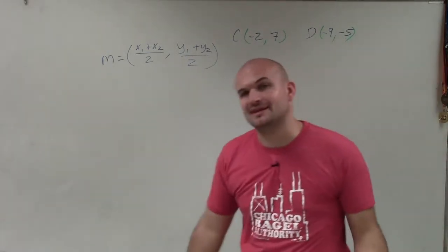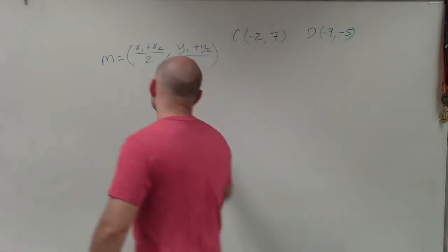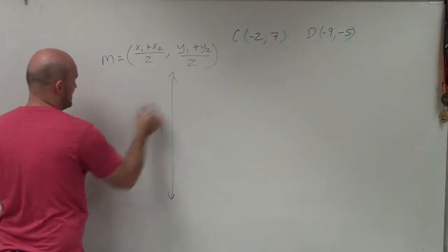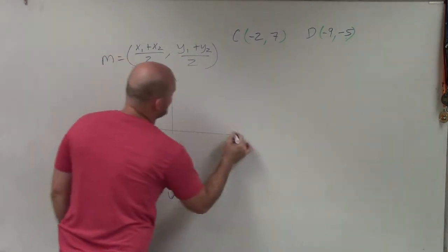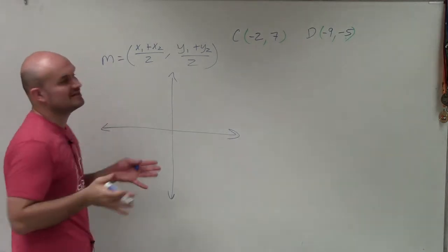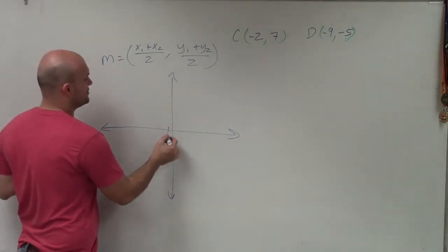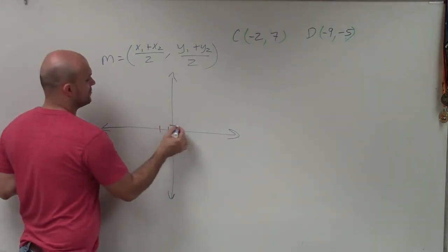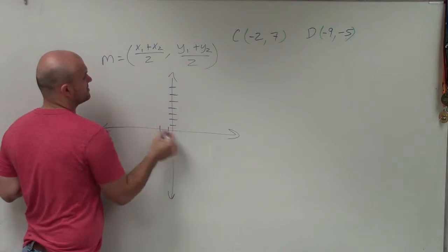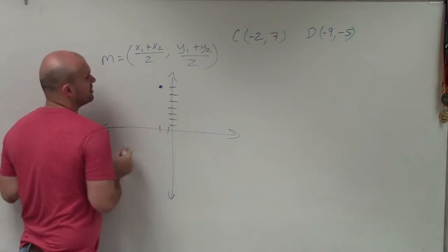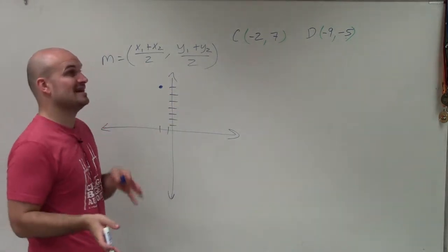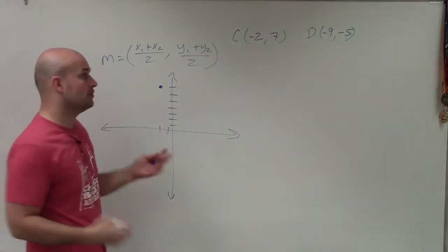Now, we don't need to plot these points, but I just kind of like doing a little extra work. So I'm just going to grab them real quick and just kind of see if I can estimate. Sometimes you're going to be given two points that are on a coordinate grid, and you're going to have to identify what the coordinates are.